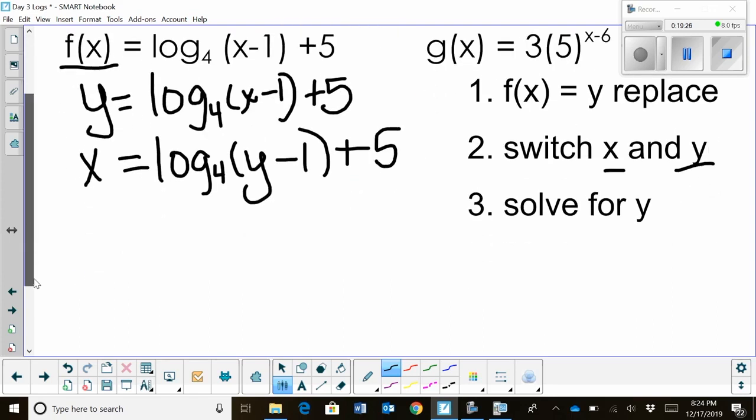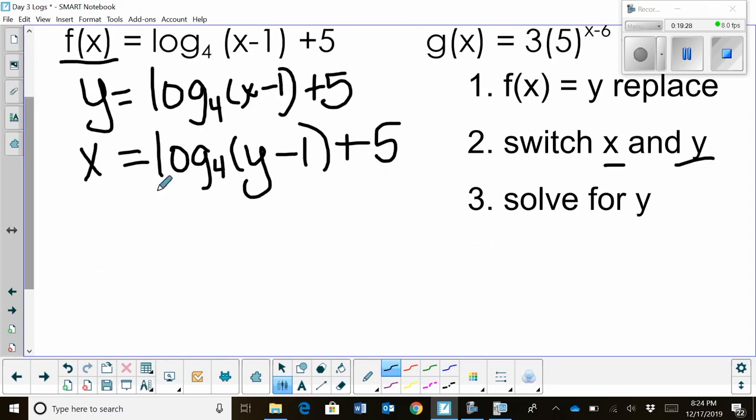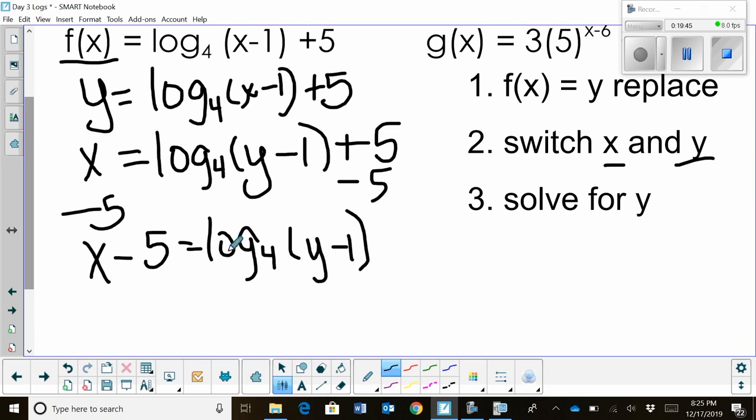Now let's just solve for y. So we need to get y by itself. So let's first isolate the log. So that means I'm going to move the five, so that logarithm can be on the same side by itself. So it can be log base four of y minus one. Now I've isolated the logarithm. It's on that side by itself.